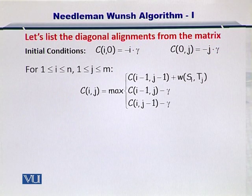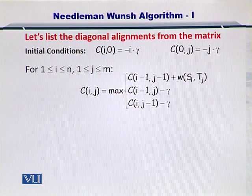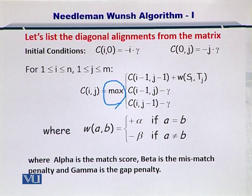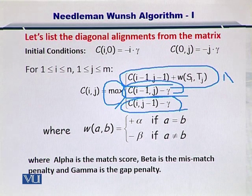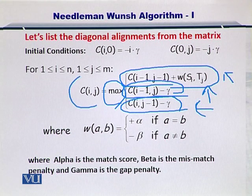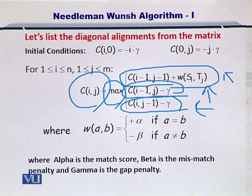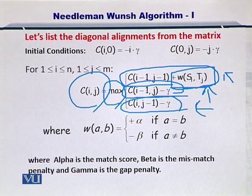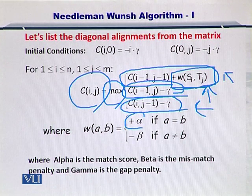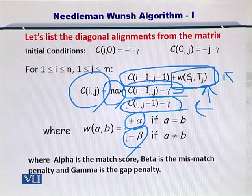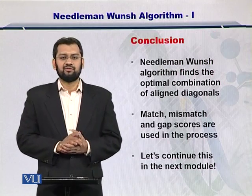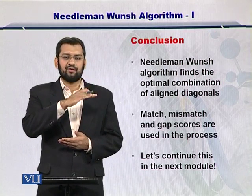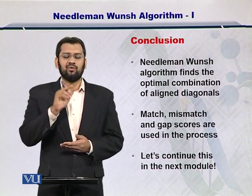Next, you consider the maximum from these three positions. By applying the maximum operator, you can use one of these values: the diagonal, the top, and the left, and assign it to CI and J. Where this W(S, I) and (T, J) are actually the match or the mismatch score. We will look at this in detail. But as an introduction, this is how Needleman-Wunsch algorithm utilizes the three positions—the top position element, the diagonal position element, and the left position element—to compute the value of the current element.